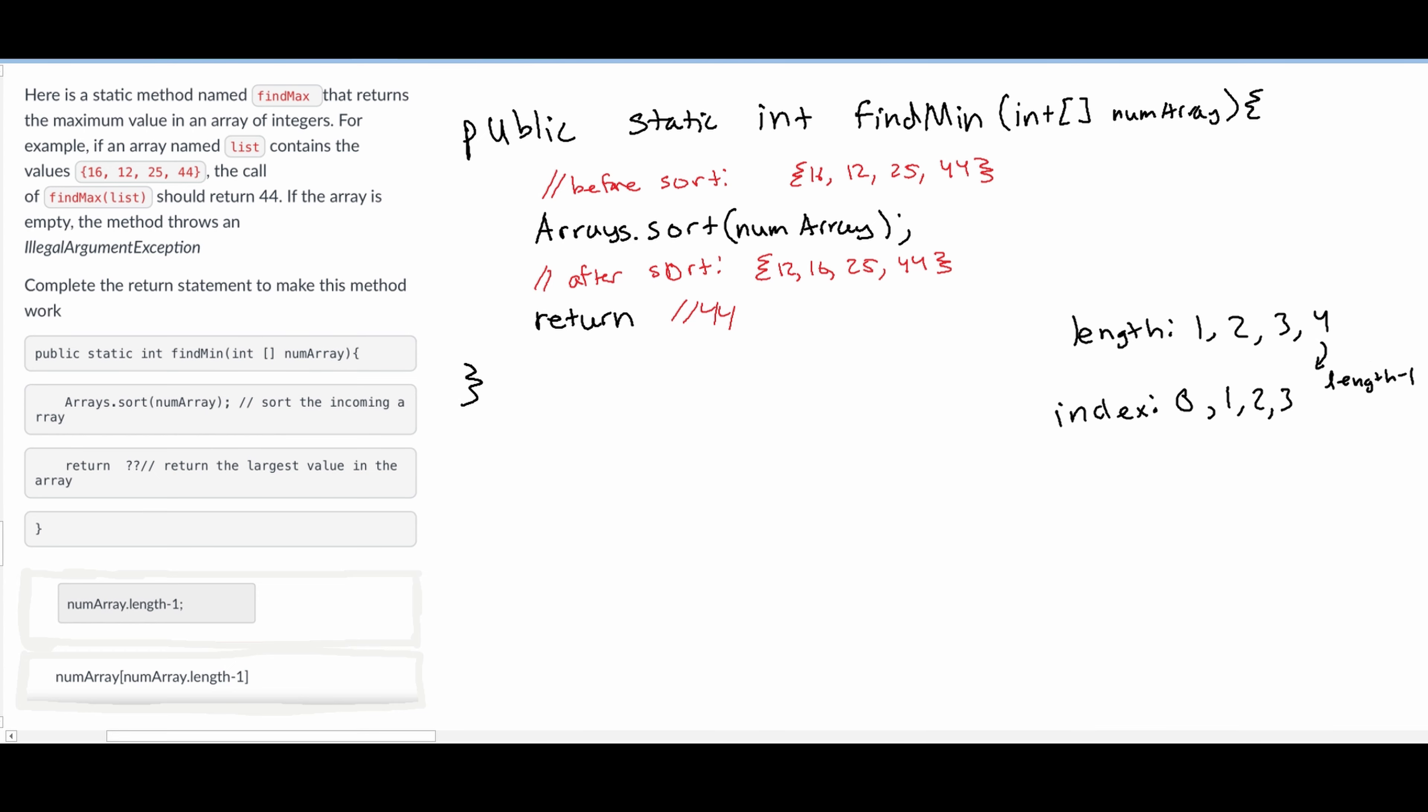So what we want to return is the element at the third index, because that is the highest index with the highest element. In our return, we are going to have our numArray, because that is the array name. Then in here, normally we would have like a number. So if we want to return the first one, we would have index 0, but we want to return the last one.